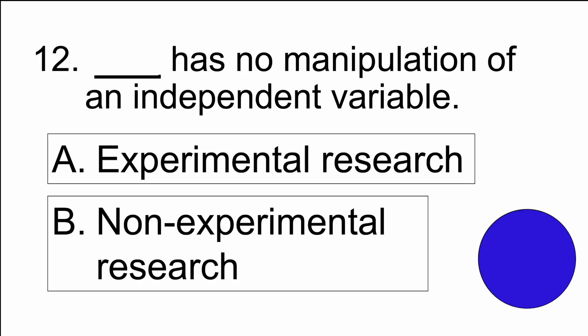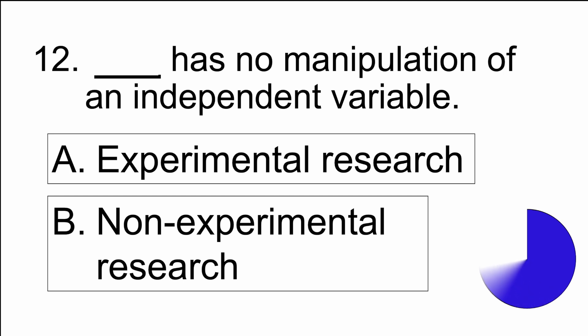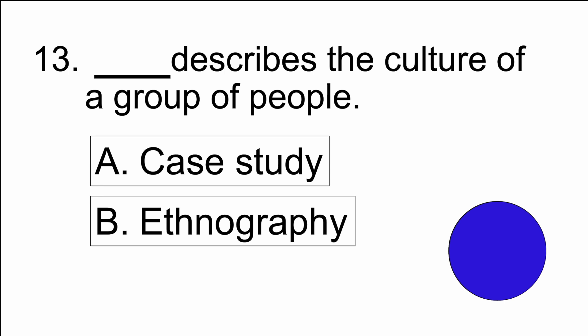Number twelve: blank has no manipulation of an independent variable — A) experimental research, or B) non-experimental research. The answer is B) non-experimental research. Number thirteen: blank describes the culture of a group of people — A) case study, or B) ethnography.